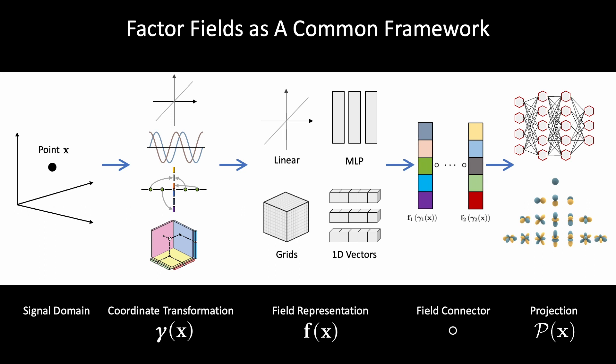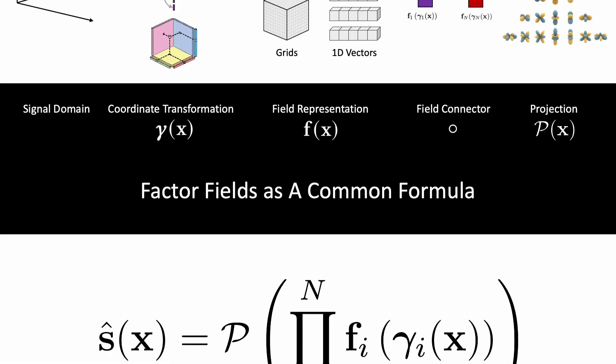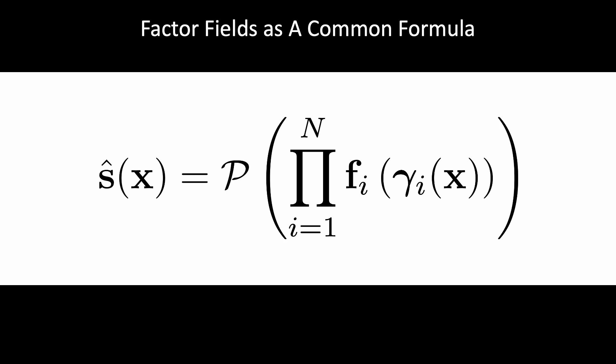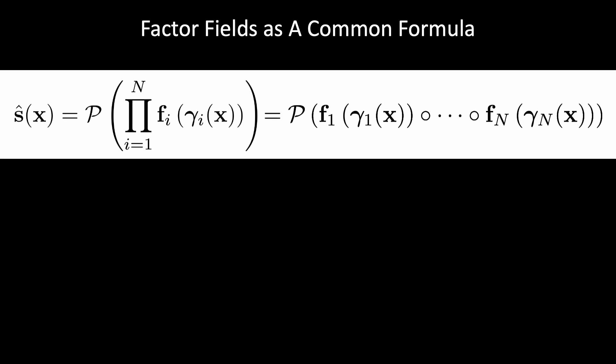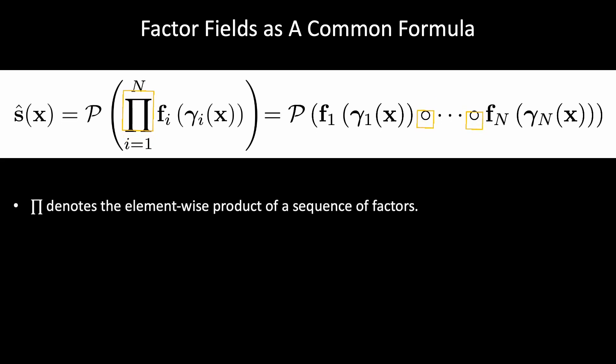We generalize two factors to our full Factor Fields framework by replacing factor 1 and factor 2 with a set of n factors. Mathematically formally, the above unified pipeline can be formulated as a single equation of element-wise products of a sequence of factors. Note that in this general form...